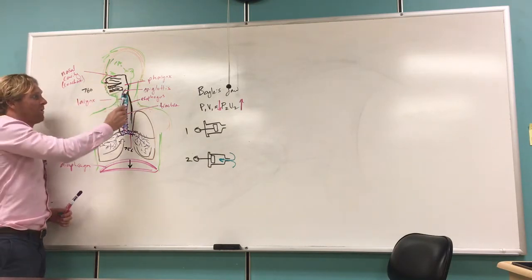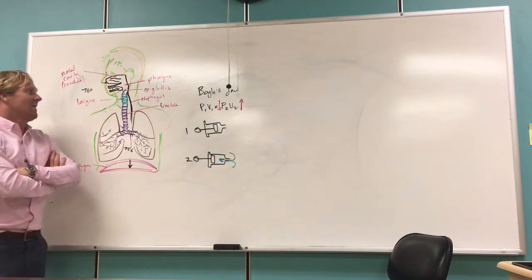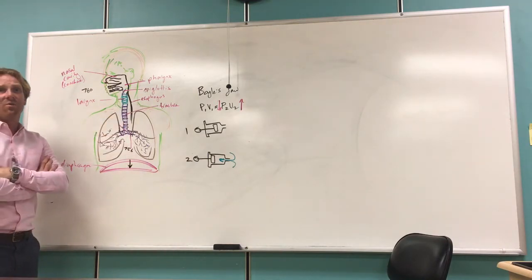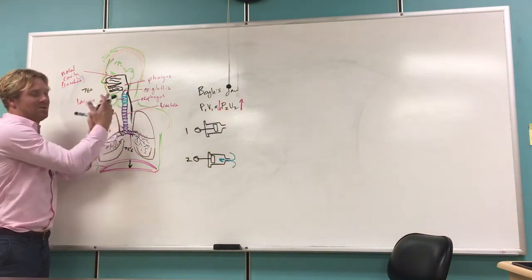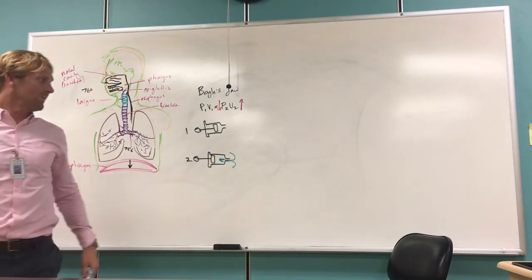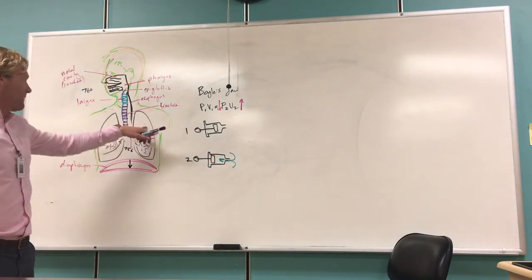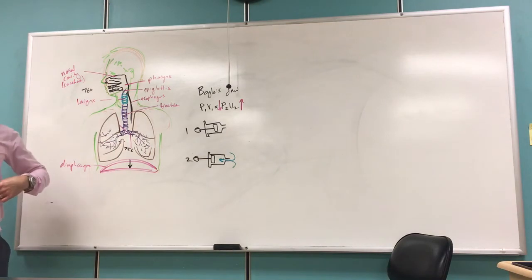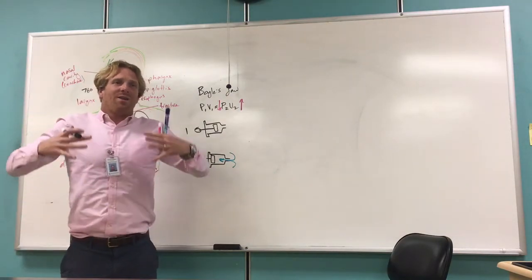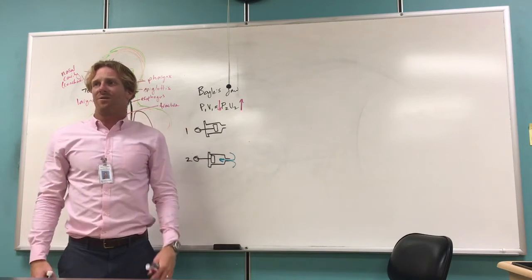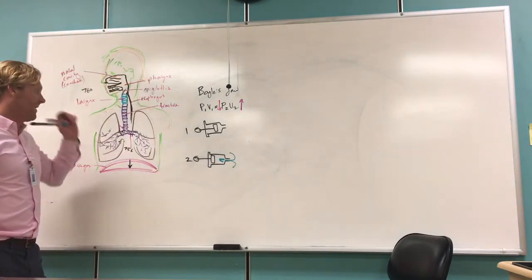This is also why we have to have the trachea and the larynx supported with cartilaginous rings or cartilage, you know, to hold those tubes open. Because if we didn't, we had this low pressure, those tubes would just collapse. We also have muscles that connect our ribs. These are the external intercostal muscles. Those guys are going to contract at the same time as the diaphragm does. And that helps to lift our ribs out and up, which also helps to increase the volume of our thoracic cavity during inhale.